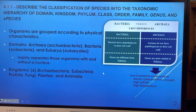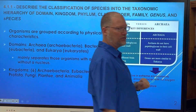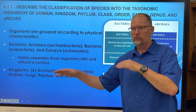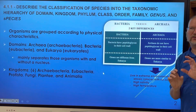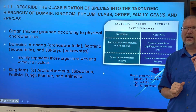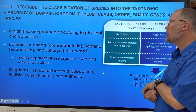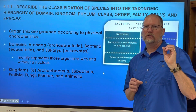The first thing we have to do in this unit is to be able to describe the classification of species into taxonomic hierarchies. They are based upon domain, kingdom, phylum, class, order, family, genus — notice how genus is italicized and capitalized — and species, which is also italicized but with a lowercase first letter. I'll give you more specific examples of that in a moment.